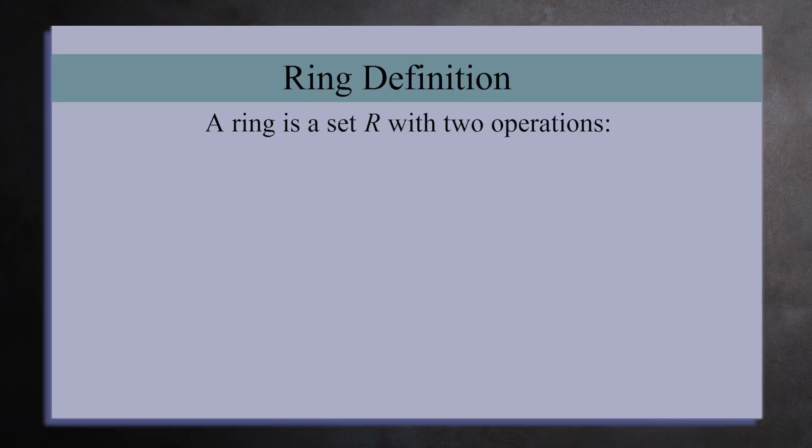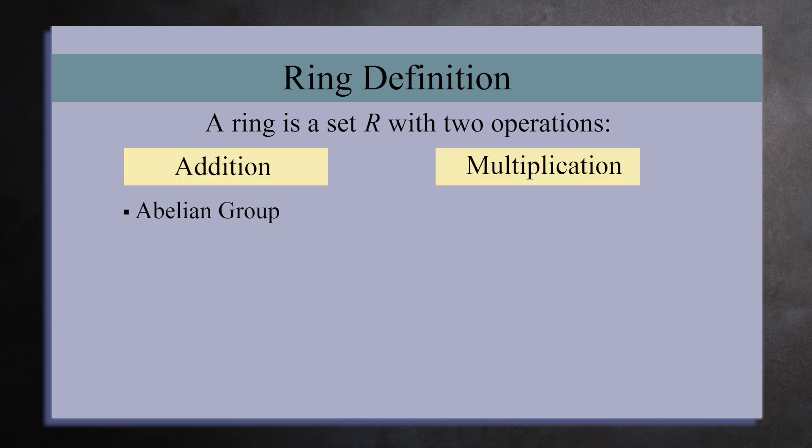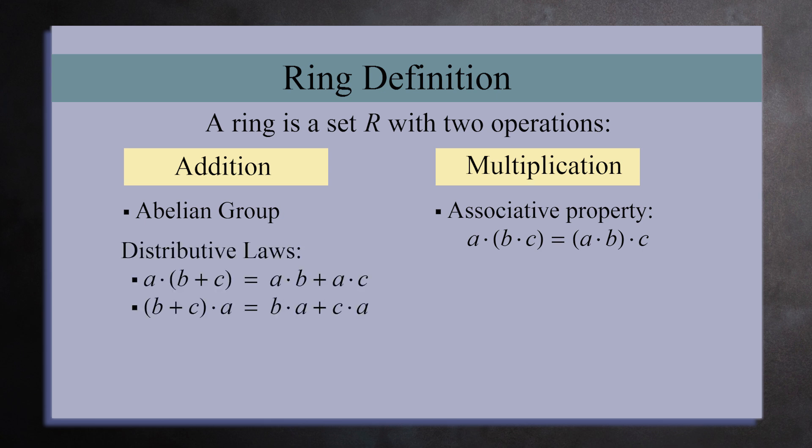Technically speaking, a ring R is a set of elements with two operations, addition and multiplication. It's an abelian group under addition. Multiplication obeys the associative property. And addition and multiplication are connected by the left and right distributive laws.